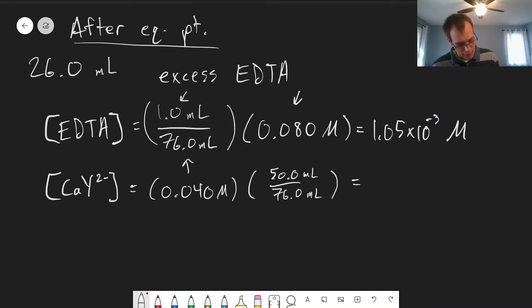That gives us 2.63 times 10 to the minus 2 molar - almost the same as at the equivalence point, but slightly diluted.